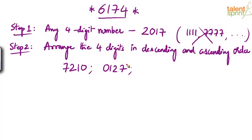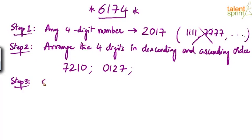So we now have two four-digit numbers by arranging the digits in descending and ascending order. Remember, we may need to add leading zeros to get a four-digit number. For example, arranging the digits of 2017 in ascending order gives 127, but we add a leading zero to make it 0127. So step two gives us two four-digit numbers.